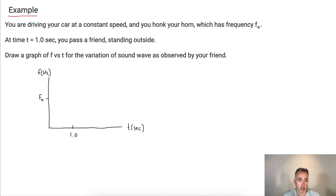Let's take a look and see if we can make this make sense. We've got an example here. You're driving in your car and you're going at a constant speed. So let me just try to draw, here's your car. And you're emitting a sound, you're honking. And your friend is just standing here. What are they going to receive? So at time t equals one second you pass your friend who's just standing still. What's going to happen with the frequency versus time for the sound wave that your friend is going to observe?